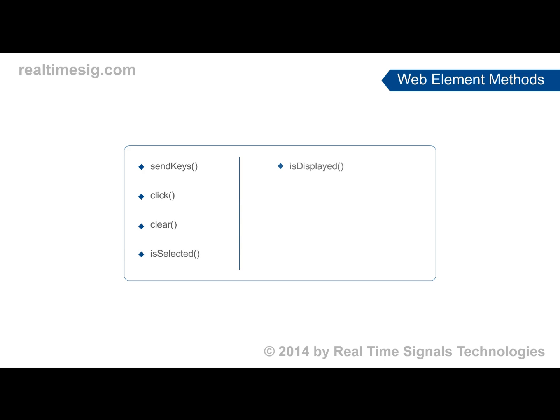IsSelected, IsDisplayed, and IsEnabled are mostly used on dropdown box and list box web elements. GetText is used to return the text value on a particular WebElement, and GetAttribute is used to return a particular attribute value for the WebElement. There are many more WebElement methods which will be covered in the basics of Selenium sessions.